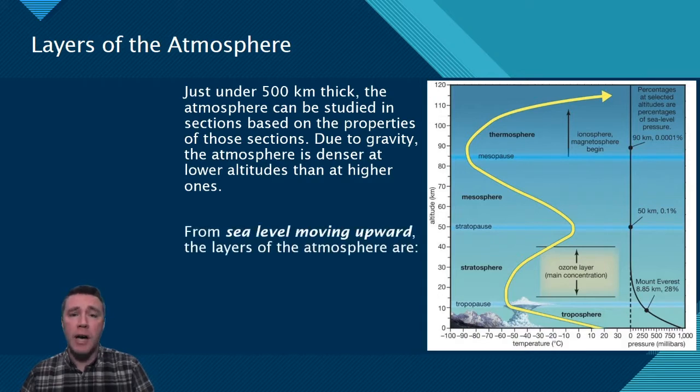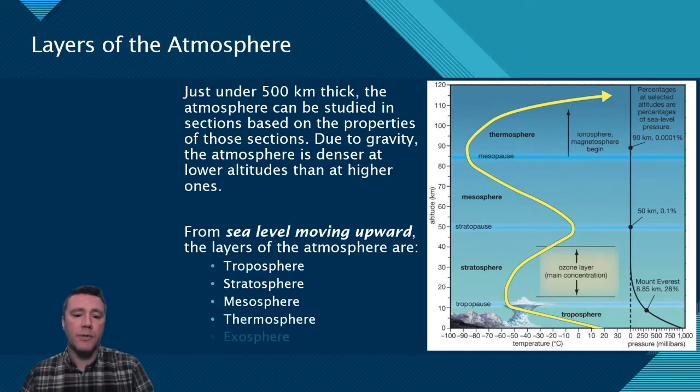Starting at sea level and moving up, the layers of the atmosphere are the troposphere, the stratosphere, the mesosphere, the thermosphere, and the exosphere, not shown in this diagram.